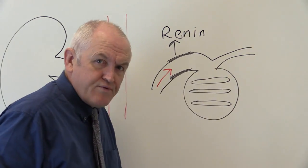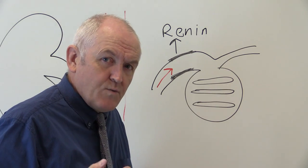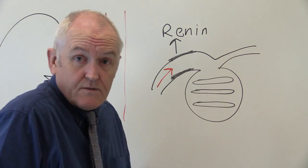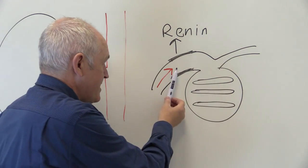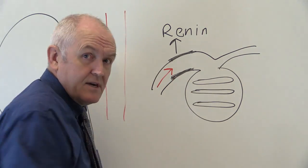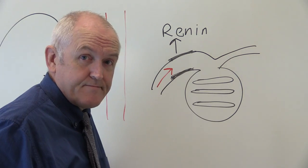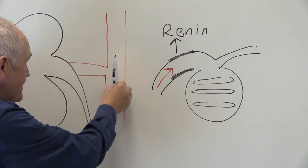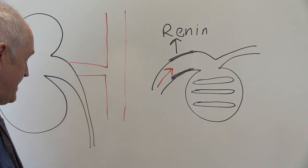As blood pressure drops, more renin will be released. Conversely, if the pressure of the blood in the afferent arteriole is good, less renin will be produced. The aim is to maintain the flow of blood to the kidney.